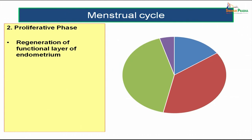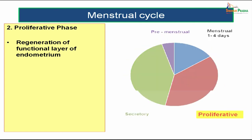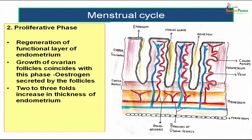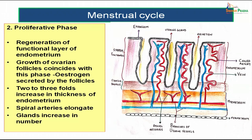In the proliferative phase, the functional layer of endometrium regenerates. The growth of ovarian follicles coincides with this phase, and estrogen secreted by the growing follicles is responsible for it. The endometrium increases in thickness roughly 2 to 3 fold. Spiral arteries elongate towards the surface of the endometrium, and glands also increase in number.